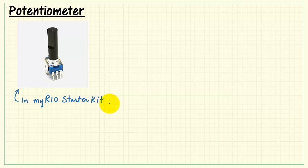This is the potentiometer that's included in the MyRio starter kit. It's a three-terminal device, and it's probably best understood by first looking at the symbol.